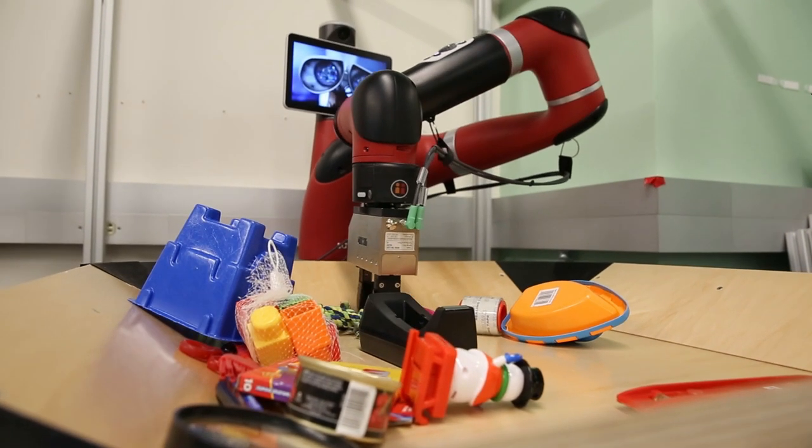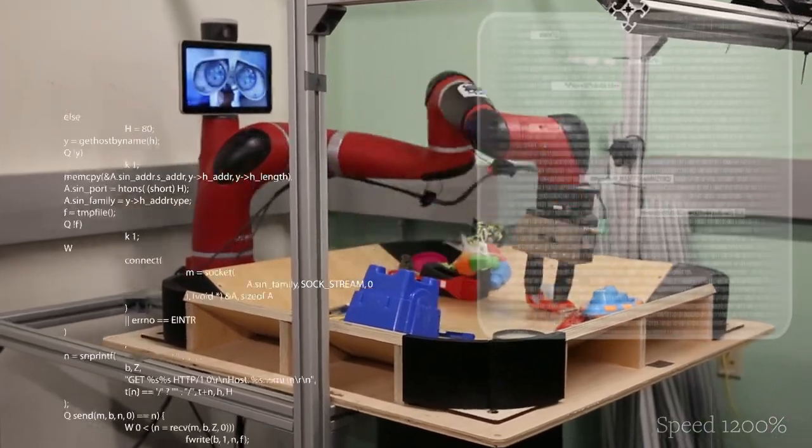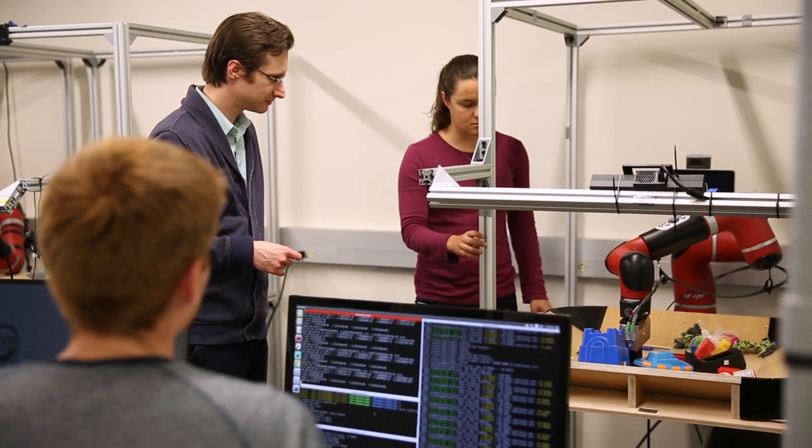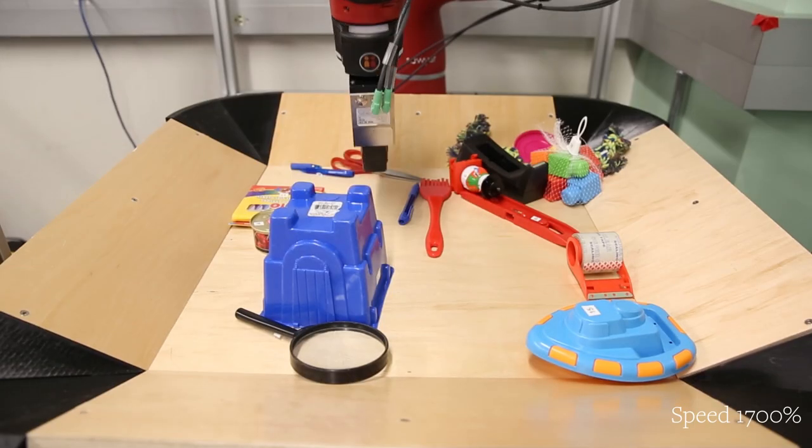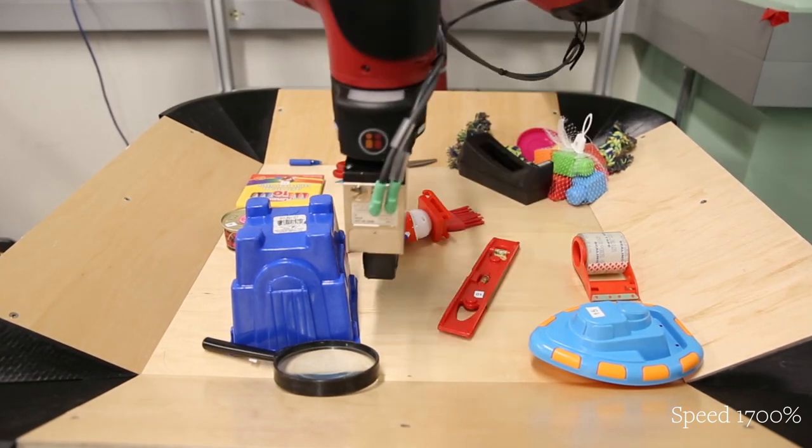Meet Vestry. Instead of giving this robot all kinds of measurements for every object and task it may encounter, the usual way they're programmed, researchers let Vestry play around with stuff, getting used to its own movements while learning the look, shape, and feel of the objects.